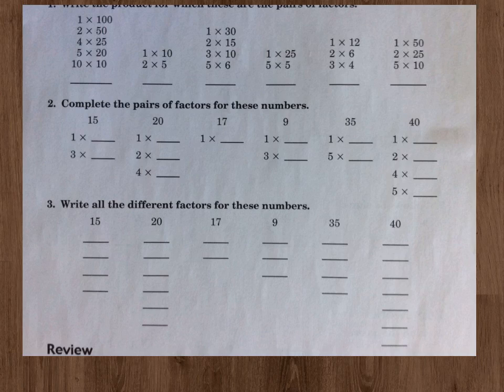Go ahead and look at the next page that we have, 97. For class practice number one, write the product for which these are pairs of factors. Now all of these are answered by writing 100. 1 times 100 is 100, 2 times 50 is 100, 4 times 25 is 100, 5 times 20 is 100, 10 times 10 is 100. So the next one would be 10. Next one, those are all pairs of factors for 30. Next one, they're all pairs of factors for 25. Next one, they're all pairs of factors for 12. Next one, they're all pairs of factors for 50.